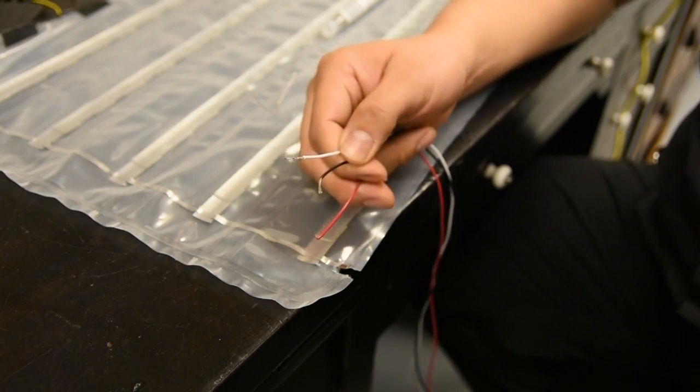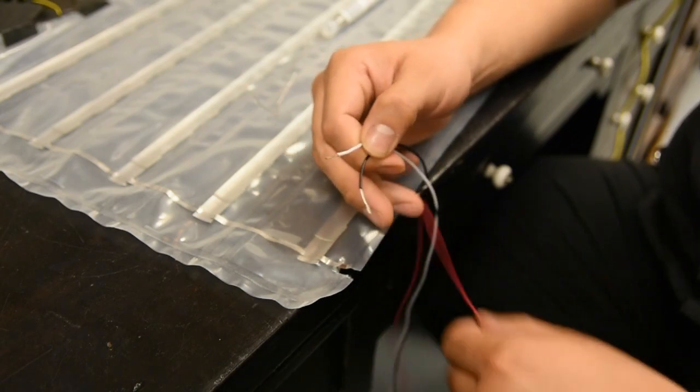We've taken our servo cable. We're only going to need the black and white wires, so we strip those off. We won't even need the red wire.